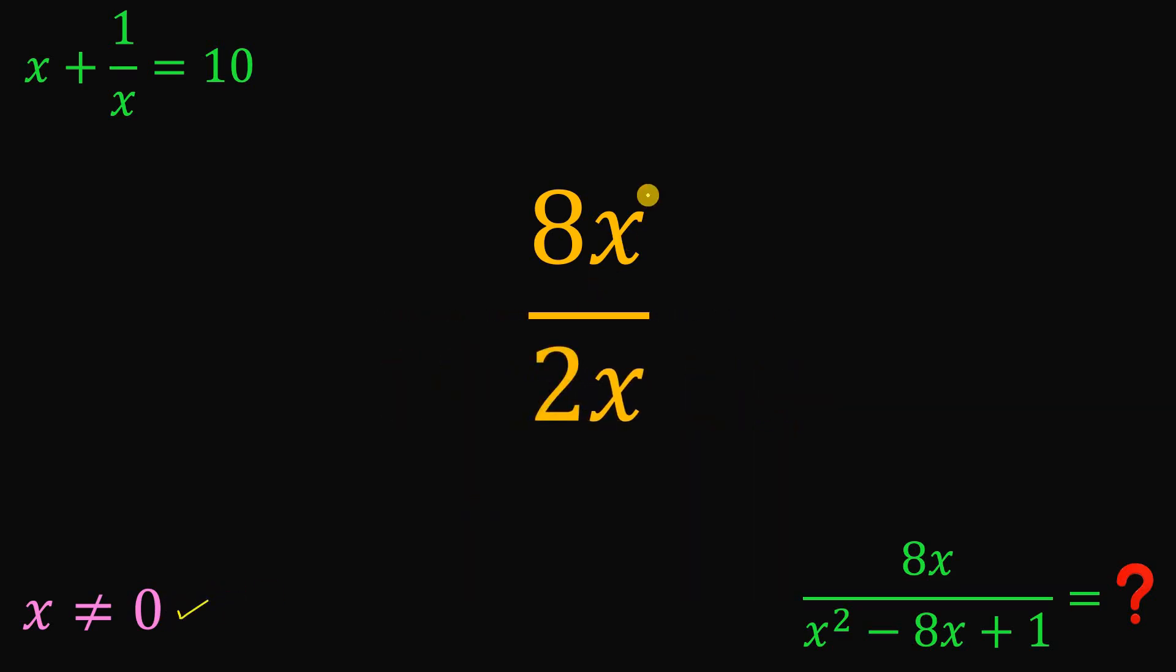Now since x is not equal to 0, we can eliminate this variable x. So we have 8 over 2, which equals 4.